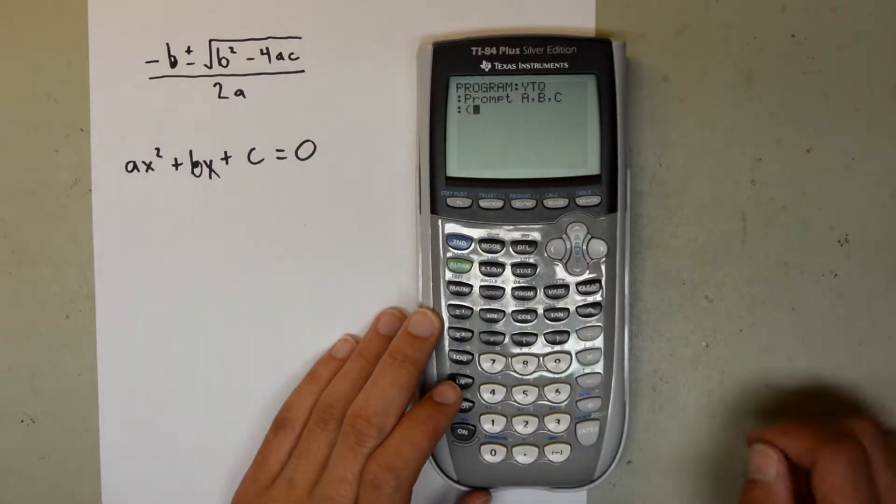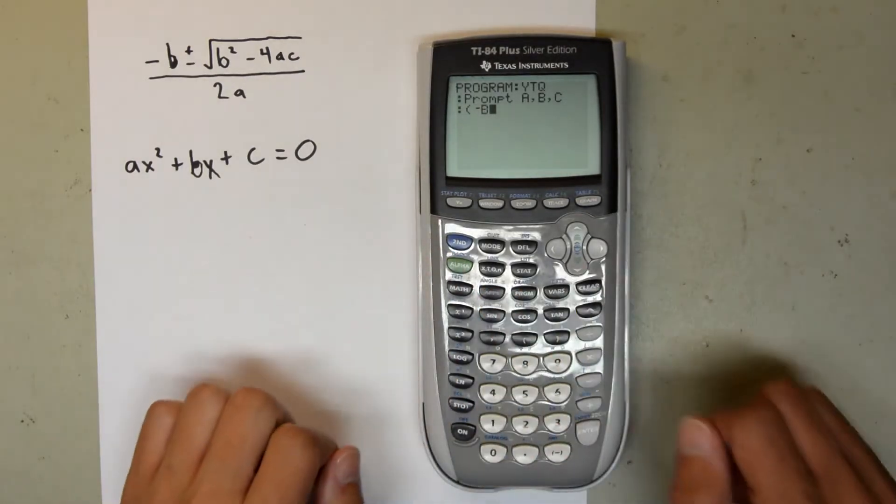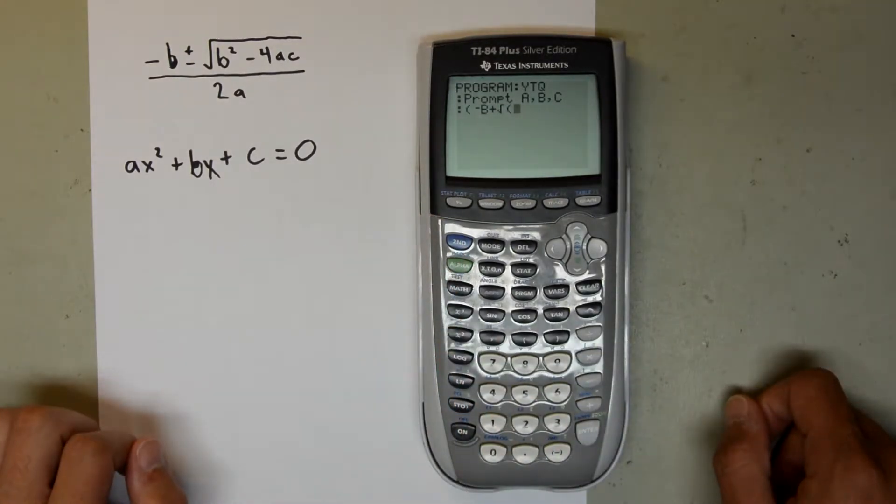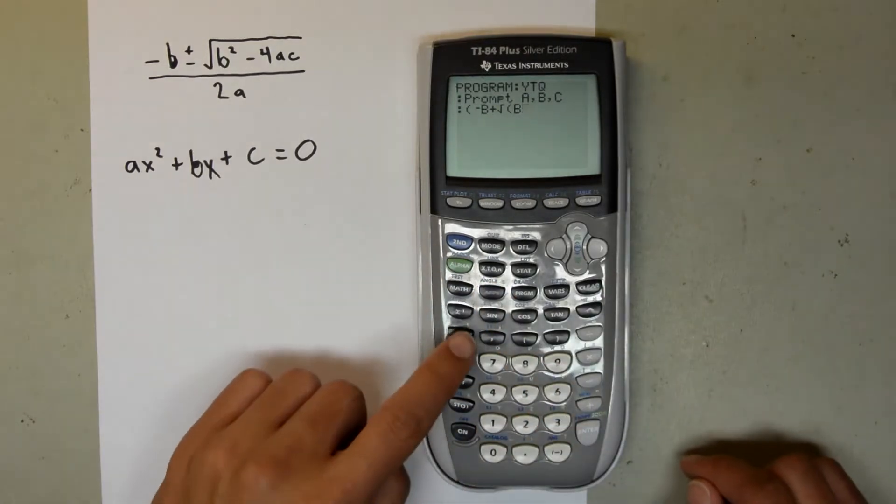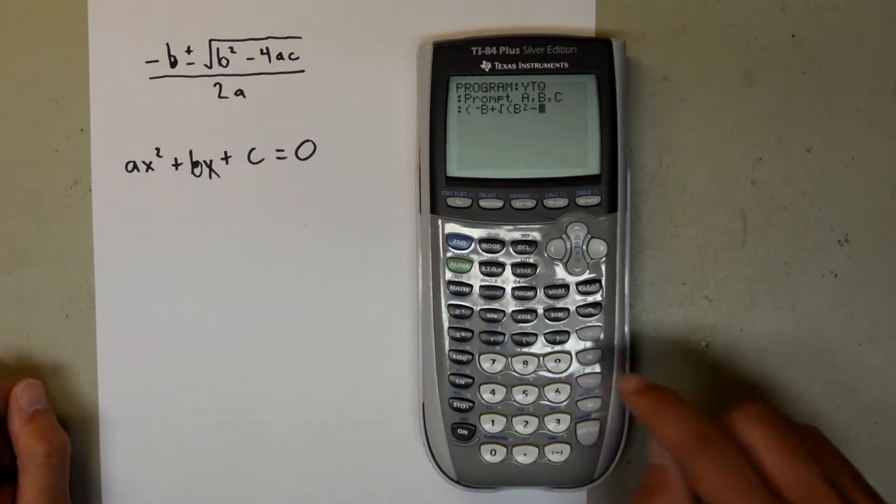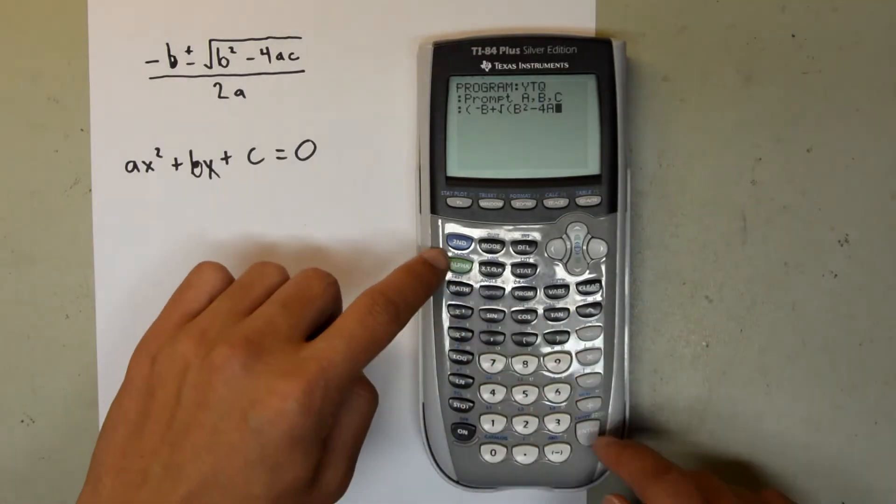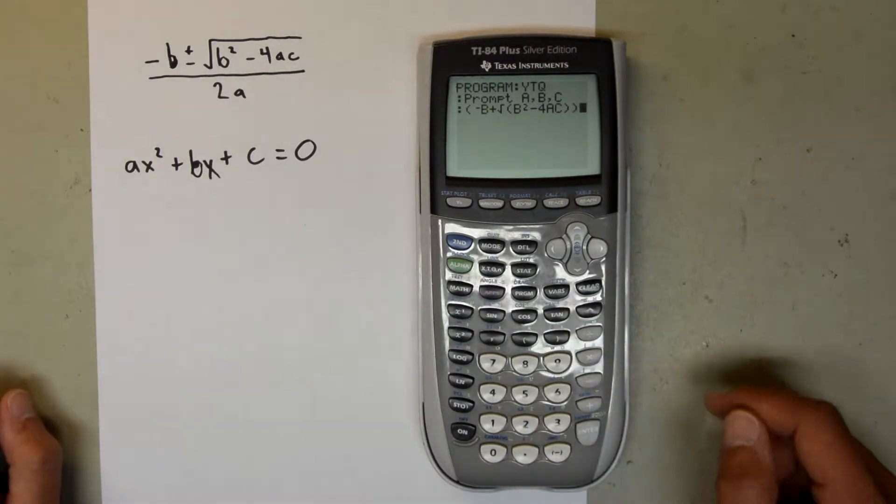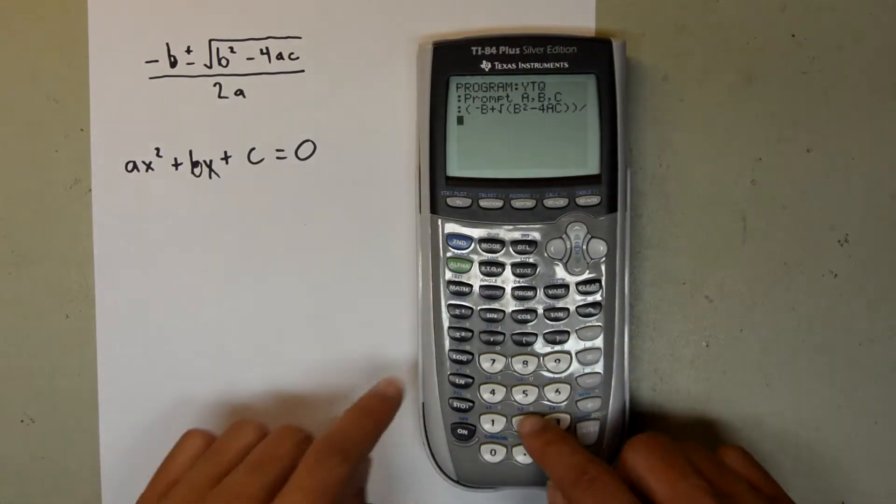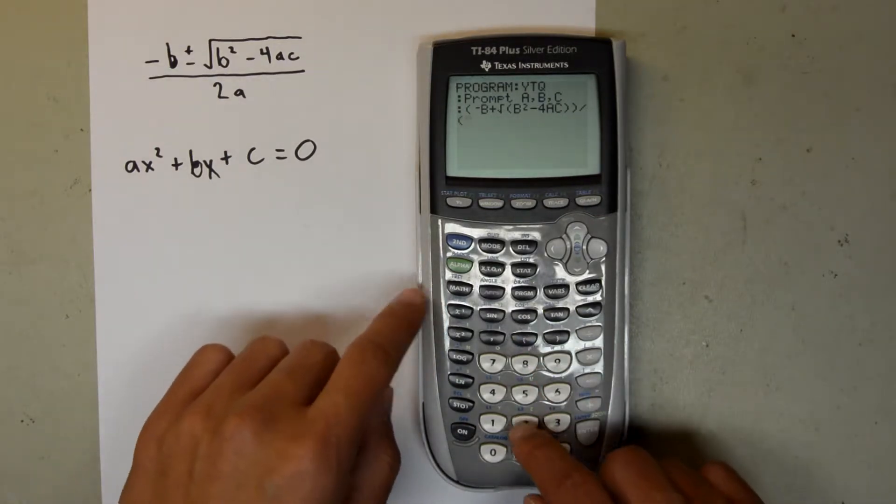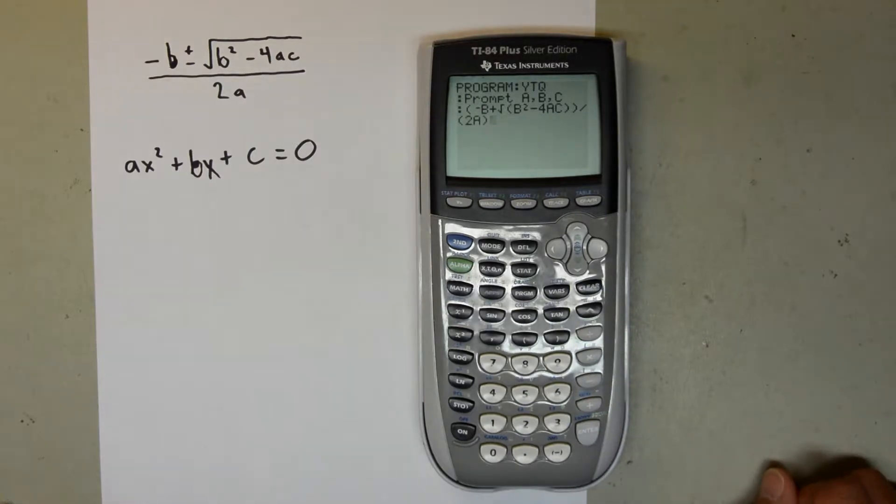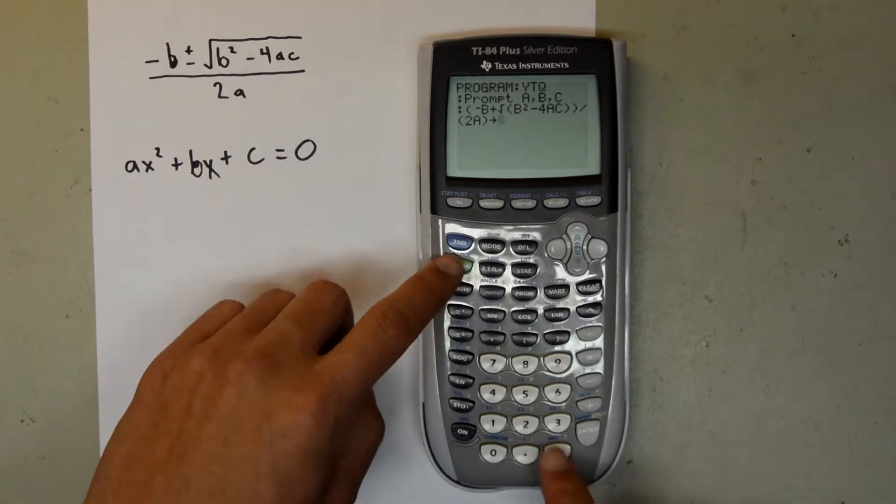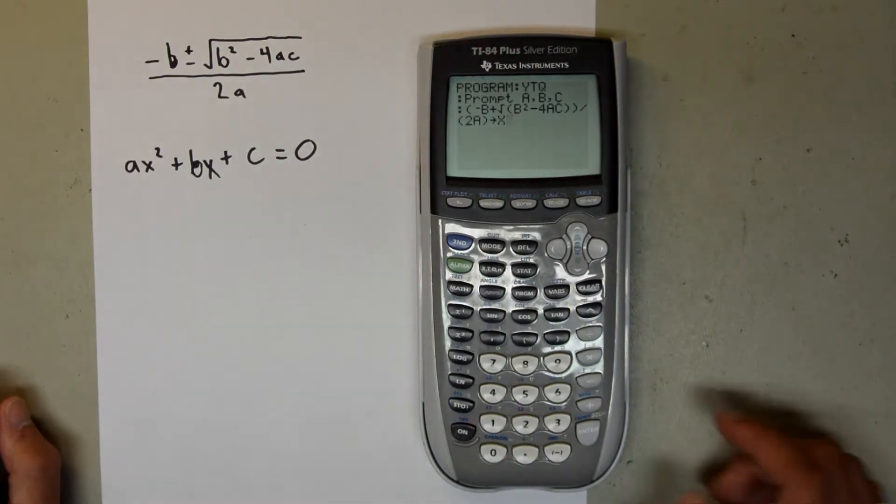So you want to type parenthesis, negative, B, plus square root, B squared, minus 4AC. Parenthesis, parenthesis, divided by, parenthesis, 2A, close parenthesis. Then you want to hit the store button, X, and then hit enter.